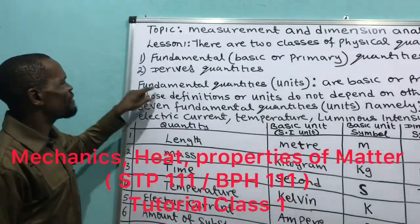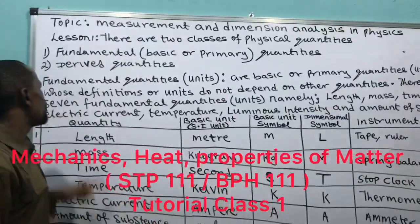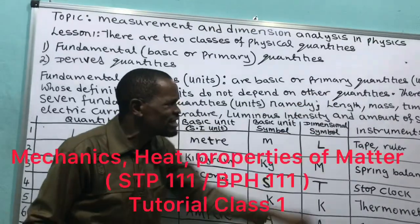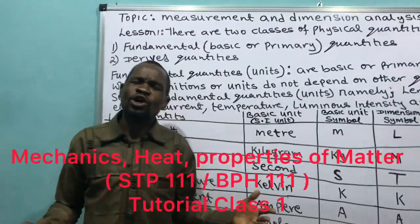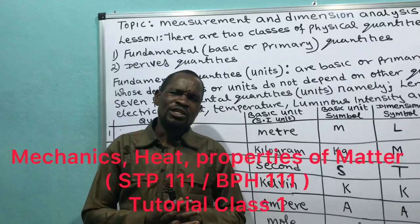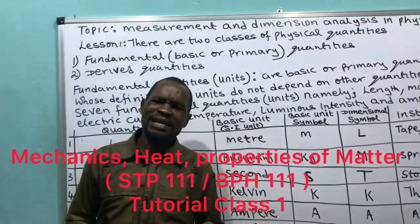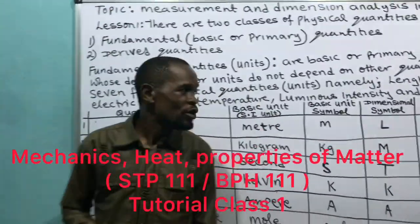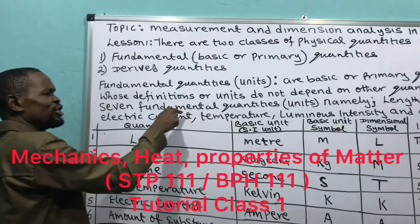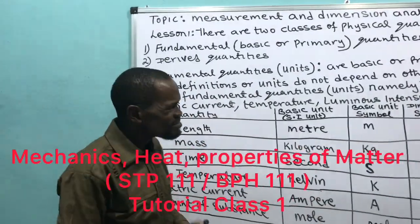Fundamental quantity — basic or primary quantity units — are those whose definition or units do not depend on other quantities. Their units do not depend on other quantities. This is the reason I call it Adam — it is like Adam, created by God, not derived from any human being.